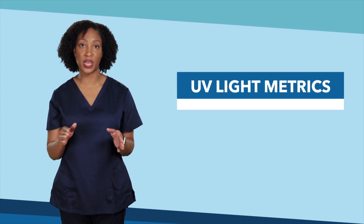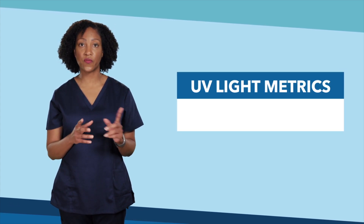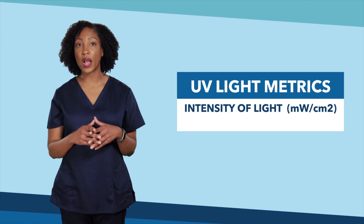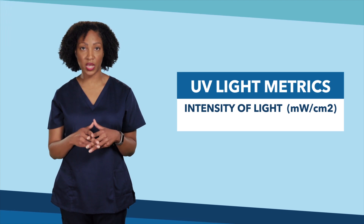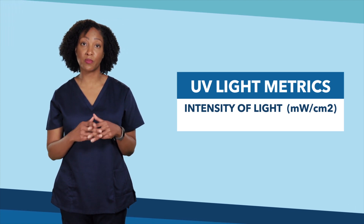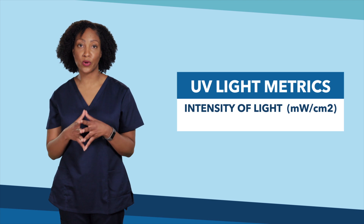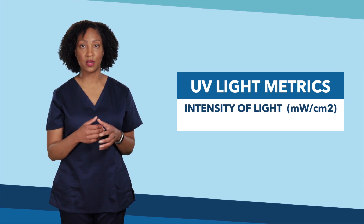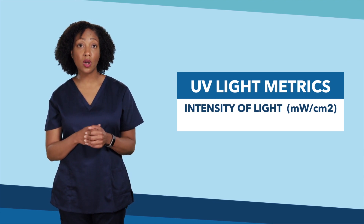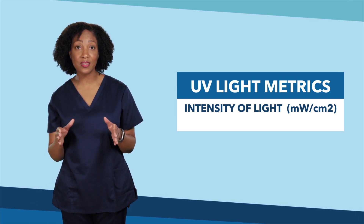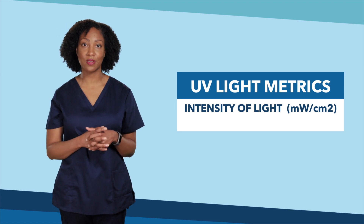Killing germs with UV light requires two important metrics. The first is the intensity of the UV light, or how much UV radiation the bulbs are producing. It's measured in milliwatts per square centimeter. The stronger or more intense the UV light, the faster it can kill germs.